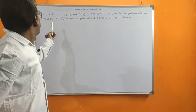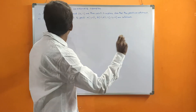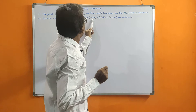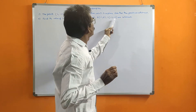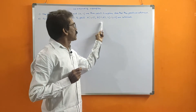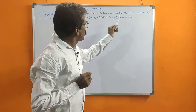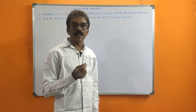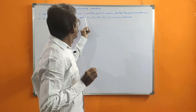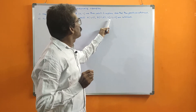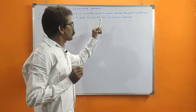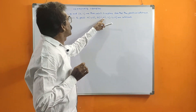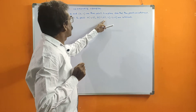Next problem: find the value of B for which the points A(1, 2), B(-1, B), and C(-3, -4) are collinear. Here the points are already given as collinear. There is one variable B, so we can calculate that value. The area formed by these three points is 0 — equate that equation to 0 and we will get the value of B.